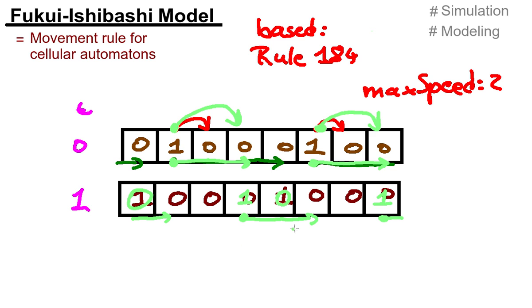And if you say, well, this is not really good for cars, because cars have acceleration and deceleration, then you should check out the Nagelschreckenberg model. This model will take acceleration and deceleration into account.